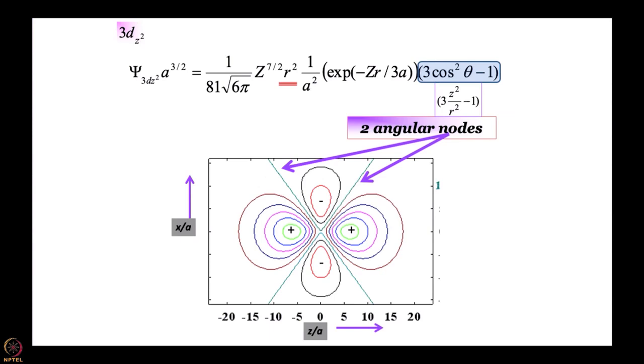Now we come to 3d z² - the most interesting d orbital as far as I am concerned. Here the angular part is 3 cos²θ - 1, and I believe we have worked out the polar plot of 3 cos²θ - 1 some time ago. When this is equated to 0, you get magic angle which has applications in many different fields. 3 cos²θ - 1 is going to be 3z²/r² - 1, giving us 2 angular nodes at θ equal to 54.7 degrees and 180 minus 54.7 degrees.